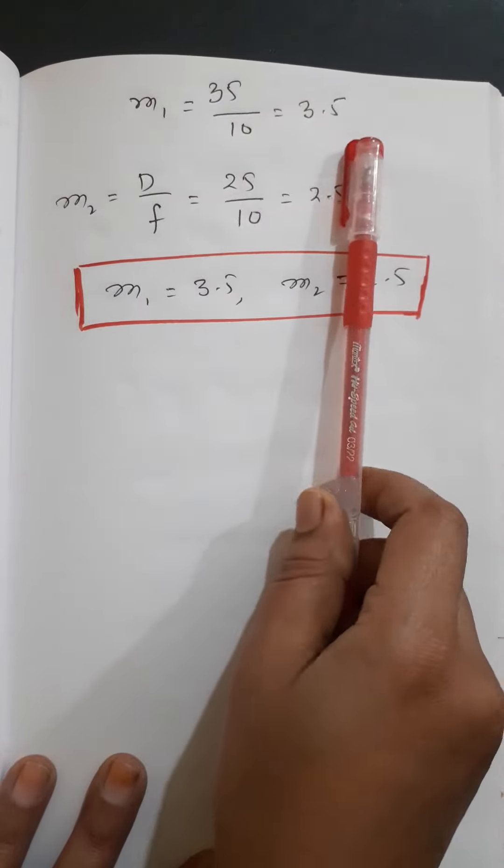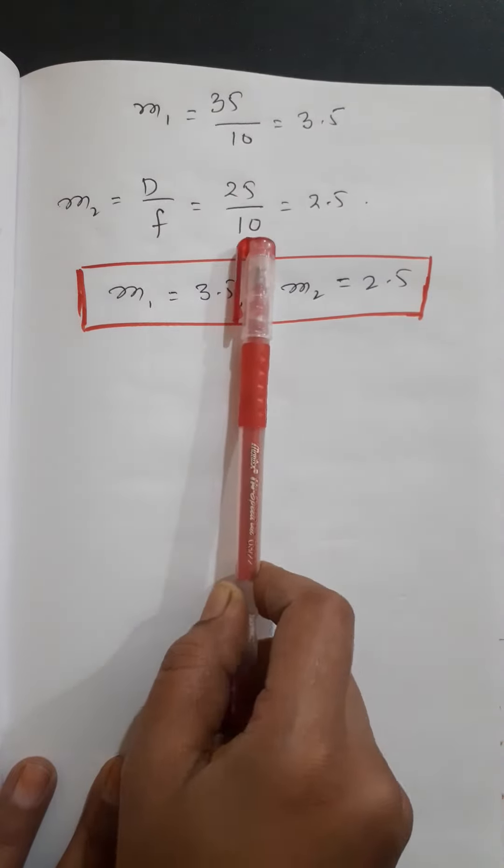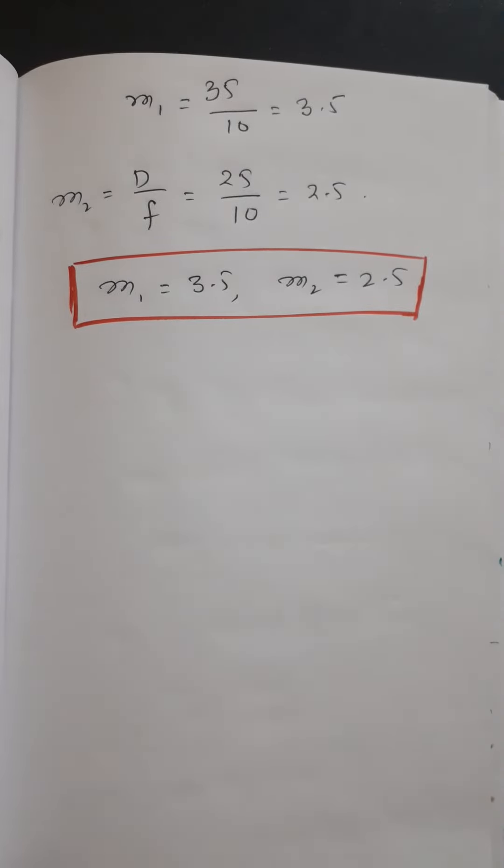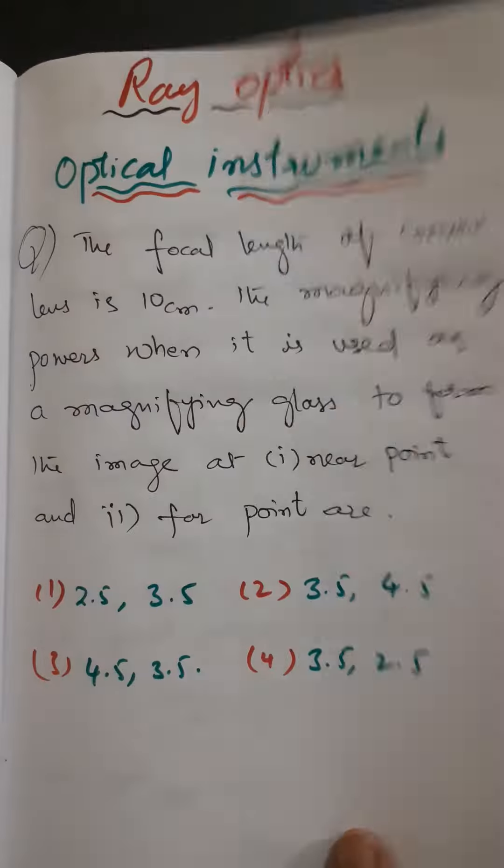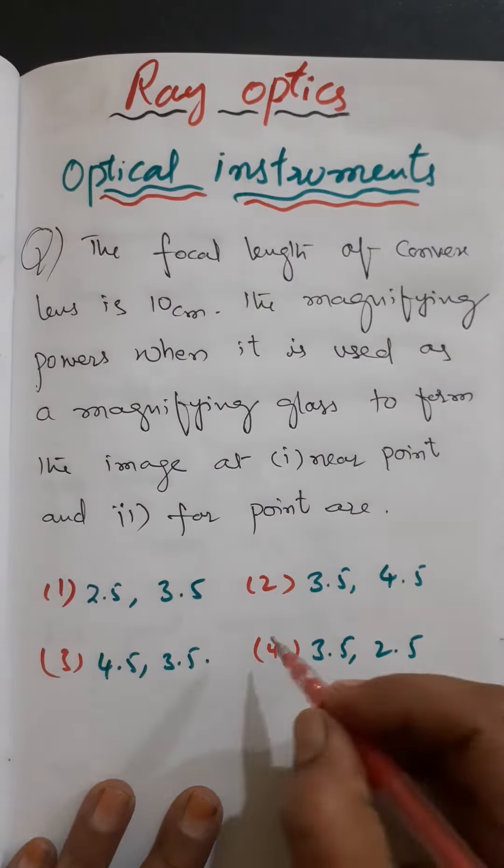M₂ = D/F = 25/10 = 2.5. So M₁ and M₂ are equal to 3.5 and 2.5, therefore the correct option is option number 4.